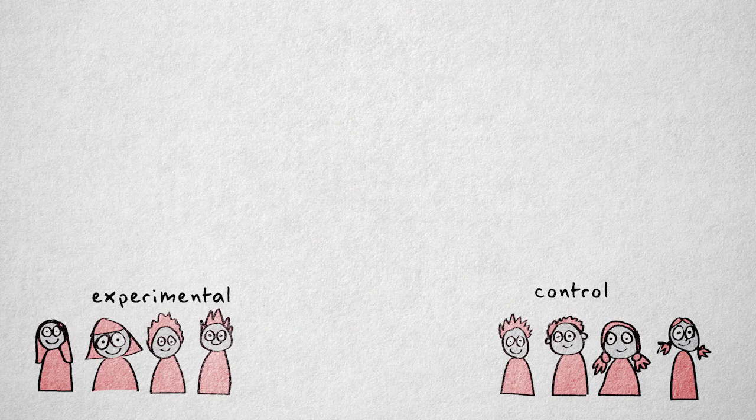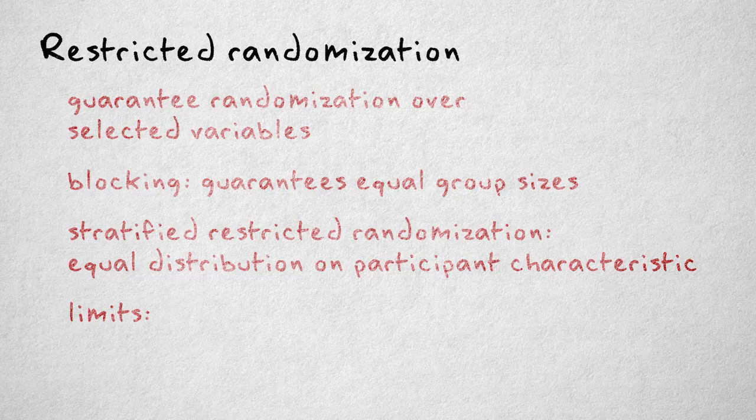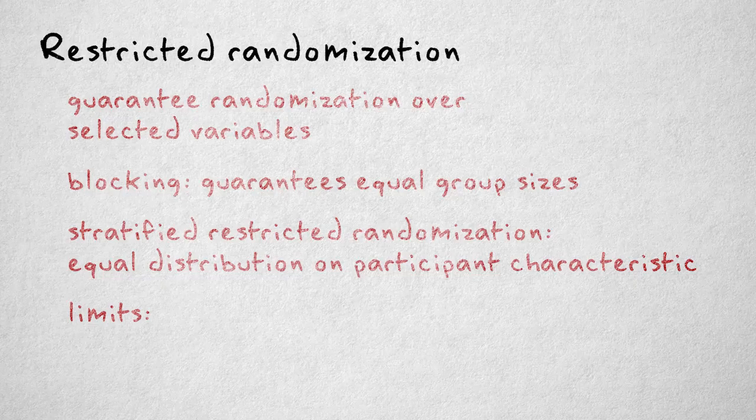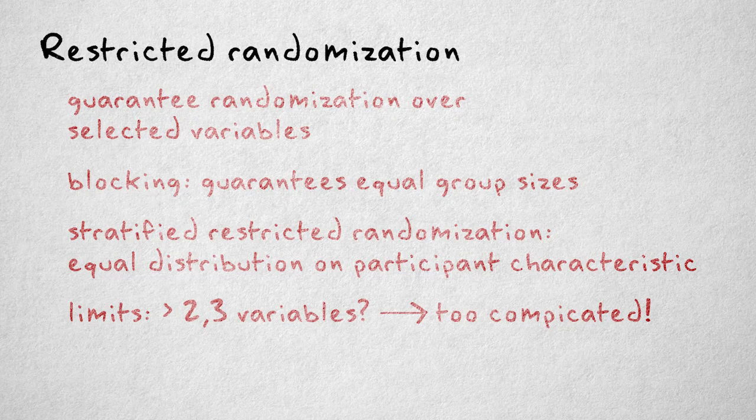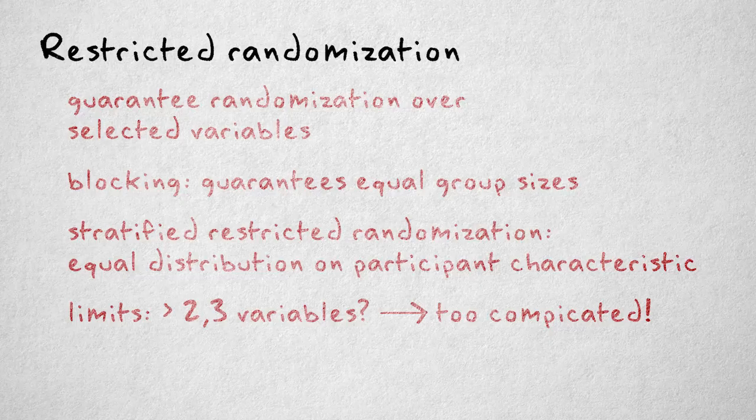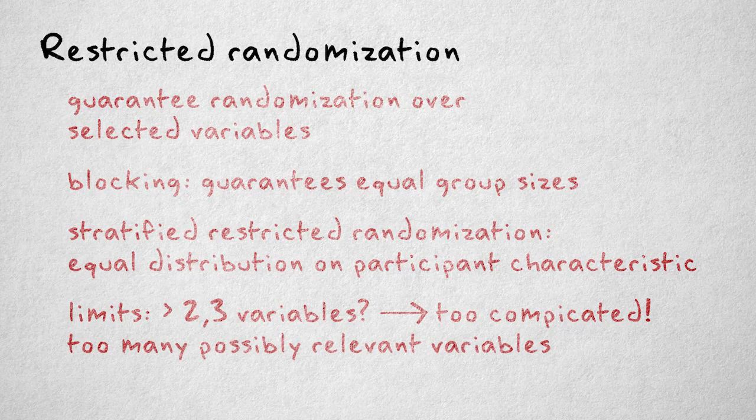Of course, stratified randomization has its limits. You can apply it to several characteristics combined, sex and age for example, but with more than two or three variables to stratify on, things become complicated. Moreover, there's an endless number of subject characteristics. It's impossible to control them all.